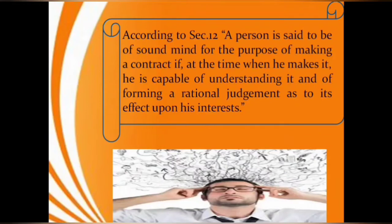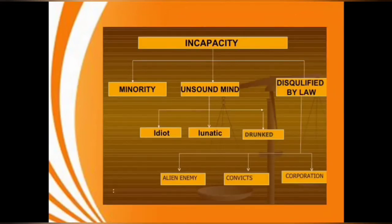What is a sound mind for the purpose of contracting? A person is said to be of sound mind for the purpose of making a contract if, at the time when he makes it, he is capable of understanding it and of forming a rational judgment as to its effect upon his interest. A person who is usually of unsound mind but occasionally of sound mind may make a contract when he is of sound mind. The mentally ill and persons who are intoxicated or drug addicted are generally excluded from entering into legal agreements.